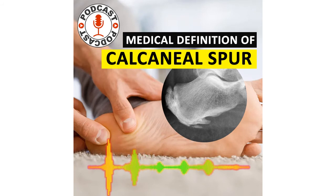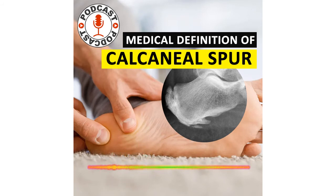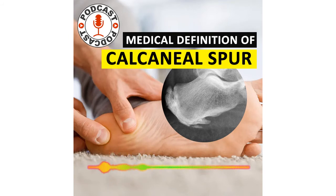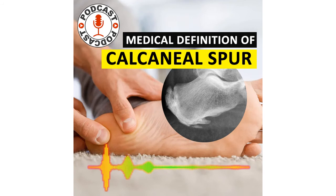Calcaneal spurs and plantar fasciitis can occur alone, or they can be related to underlying diseases that cause arthritis, such as reactive arthritis and ankylosing spondylitis.